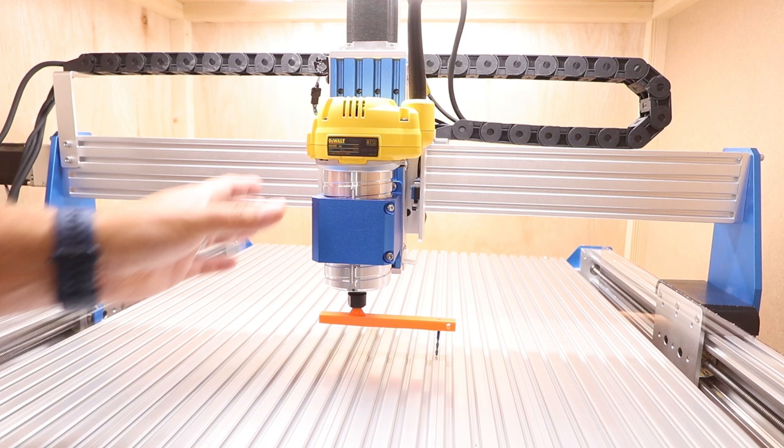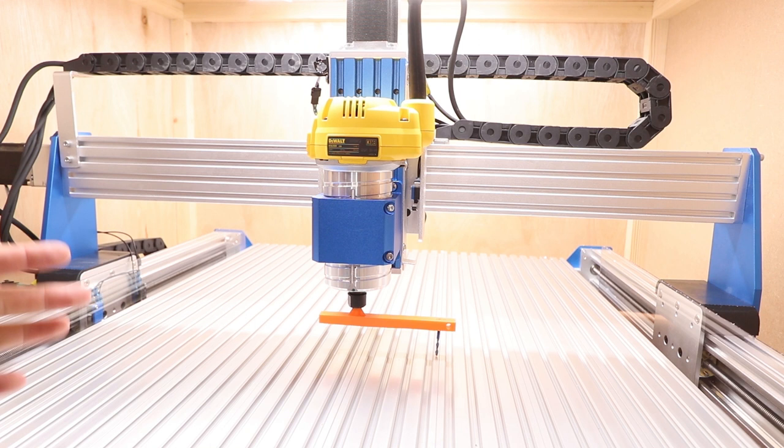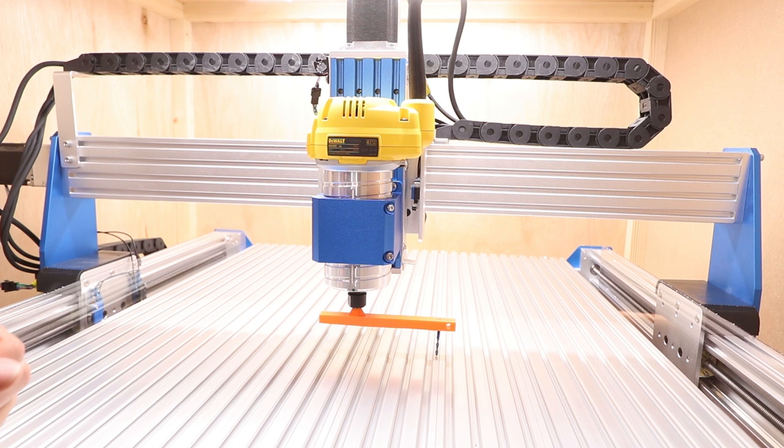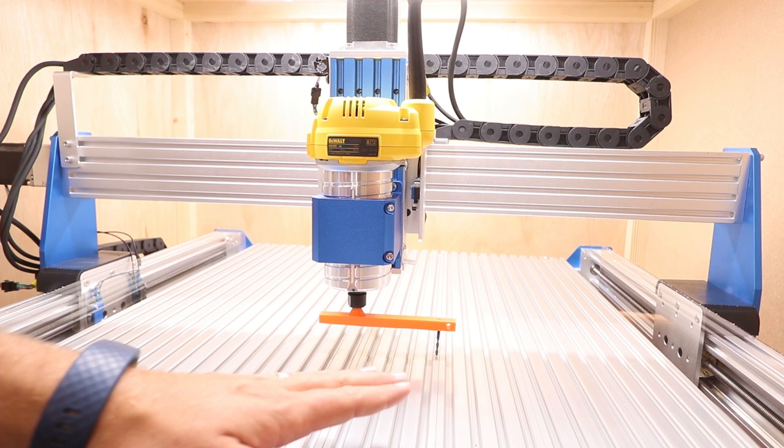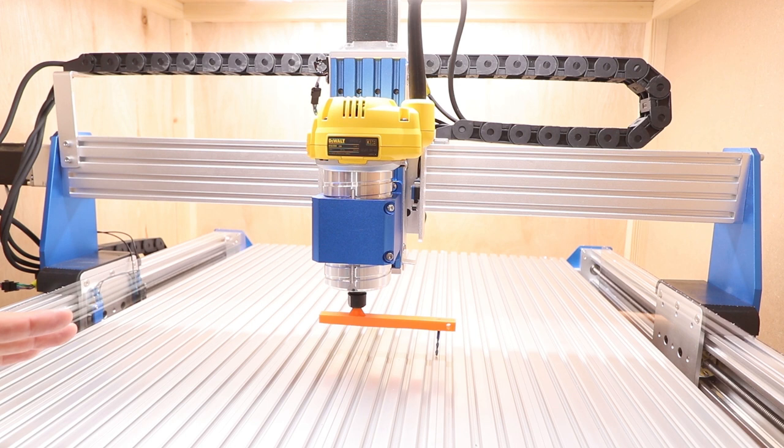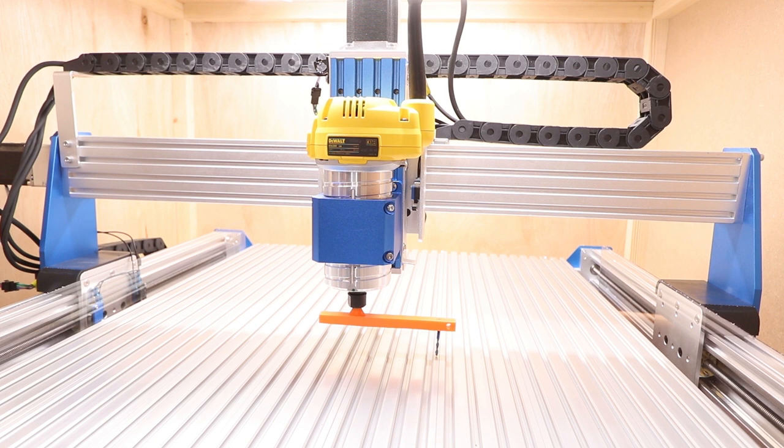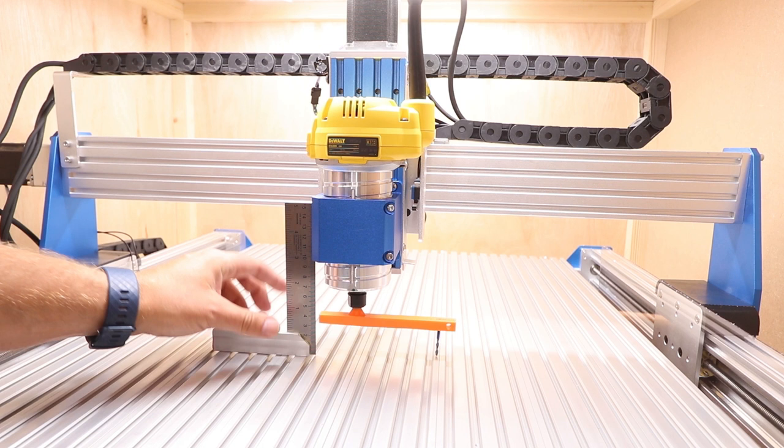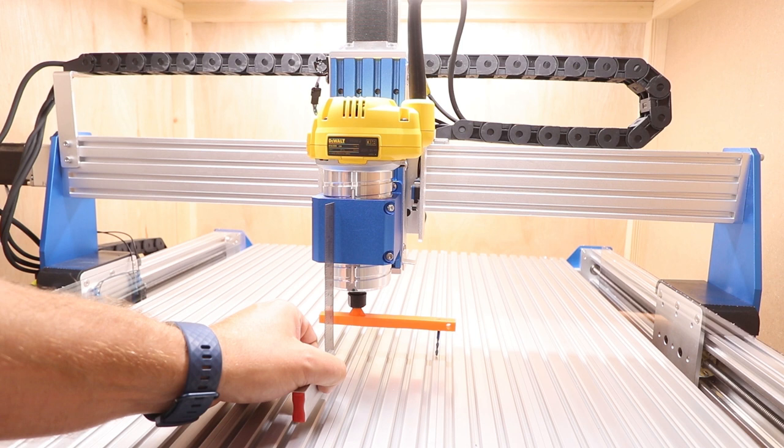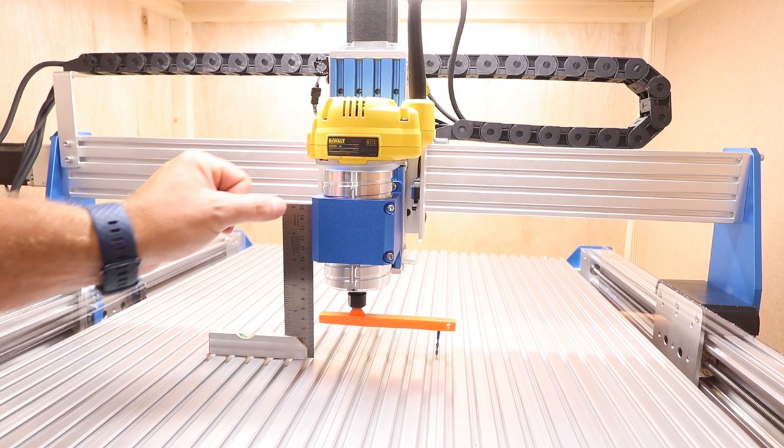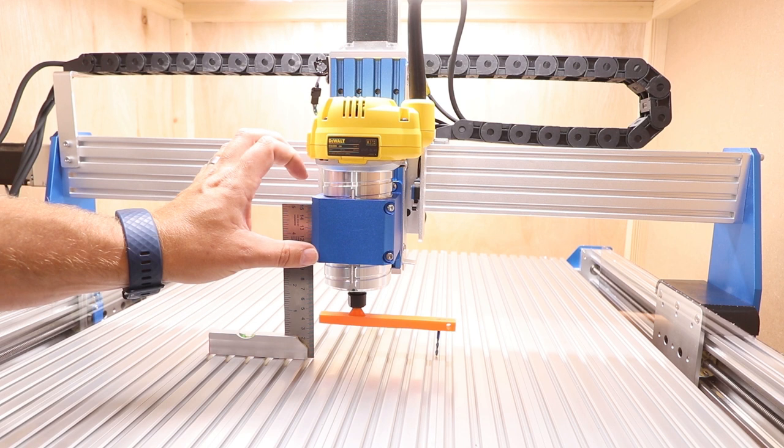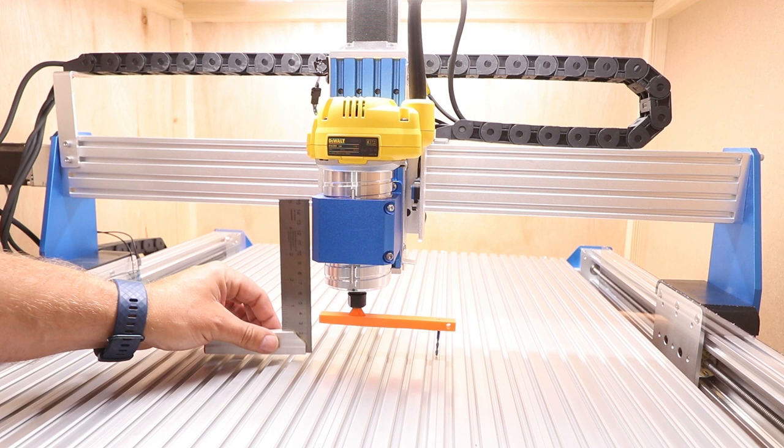The router's installed, we know everything's connected and working. There's one final thing we need to do and that is tramming the router itself. If you've seen my previous video on the 4030 spoilboard, you'll know what tramming is. Basically it means getting the router or spindle as perpendicular to the bed as possible to ensure that it mills everything level. In an ideal world you'll want to be doing this on a freshly surfaced spoilboard. You start by bringing in something like a speed square or set square and try and get the mount as square as you possibly can. Check all sides: left, right, and the front as well.